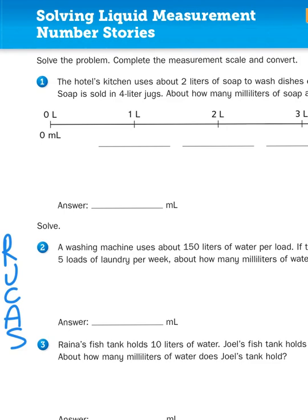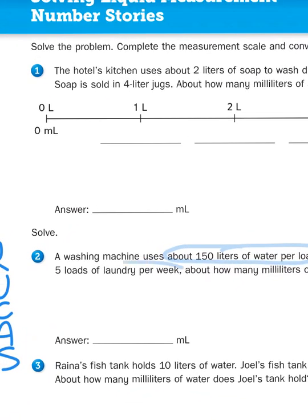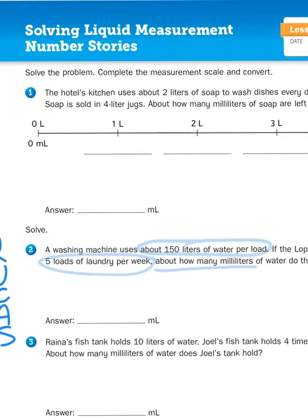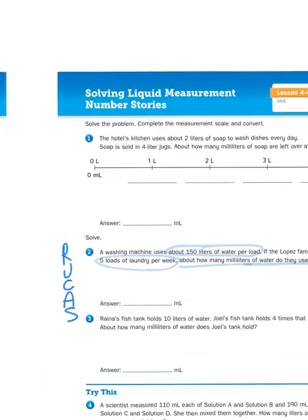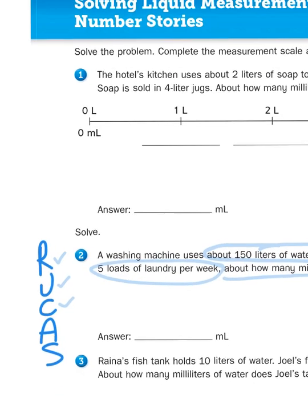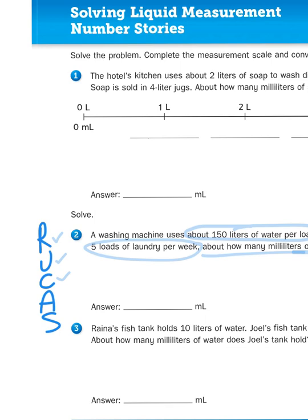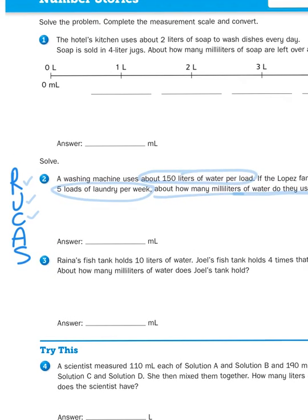A washing machine uses about 150 liters of water per load. That sounds important. If the Lopez family washes 5 loads of laundry per week, about how many milliliters of water do they use per week? I've reread the question, I circled some important information, I underlined the question. What am I being asked to do here? We've just been studying multiplication and converting units, right?